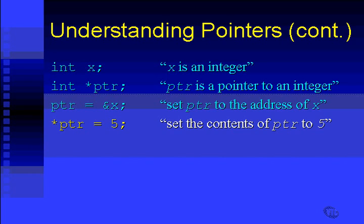I'm putting 5 in the box that is called x. Not the box that's called ptr. If I just said ptr equals 5 without the asterisk, what would that do?